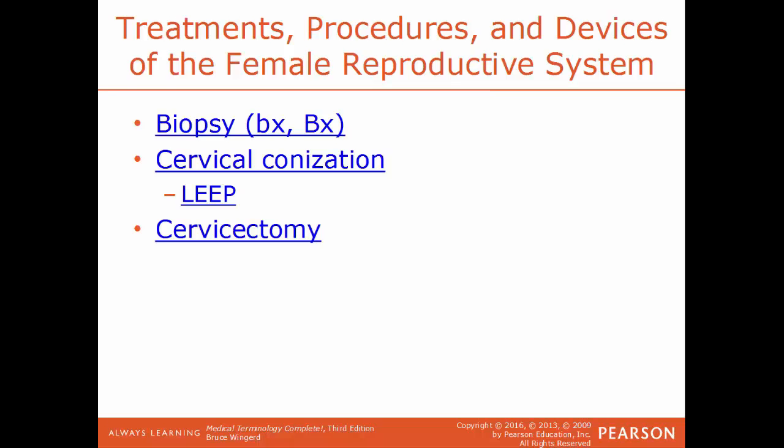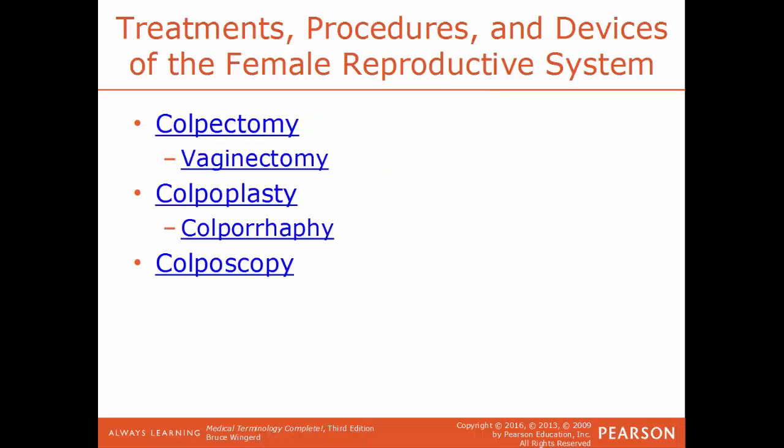Cervicectomy is the surgical removal of the cervix. Culpectomy, also called vaginectomy, is the surgical removal of part or all of the vagina — done in the treatment of certain cancers or during female-to-male gender reassignment. Colpoplasty is the surgical repair of the vagina, which requires sutures — a process called colporrhaphy. Colposcopy is a visual examination of the vagina, cervix, and vulva.